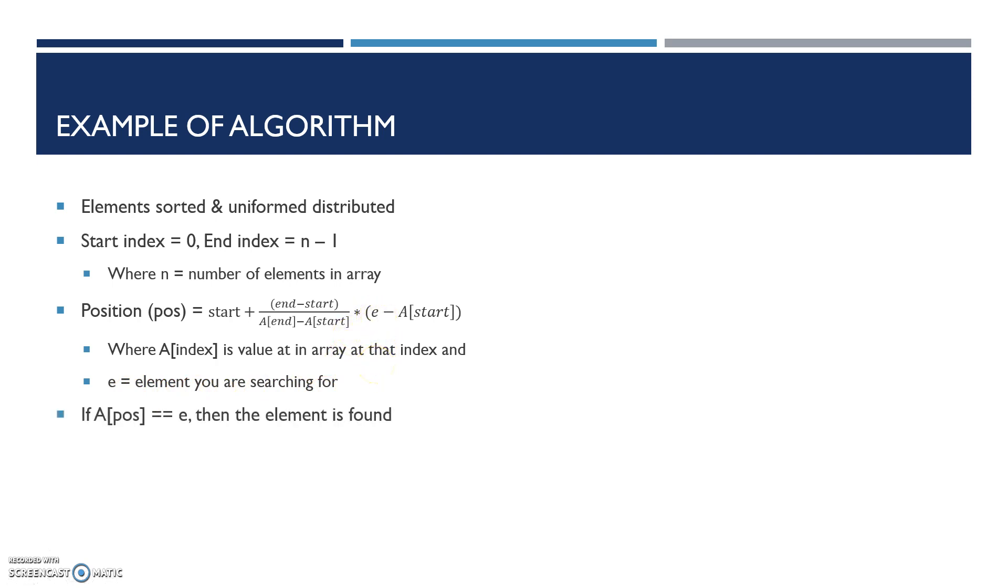If in your array at your current position you find that it's equal to e, then you found the element you're searching for. If your element is greater than your current position's value, then alter your start index to be your current position's index plus 1.